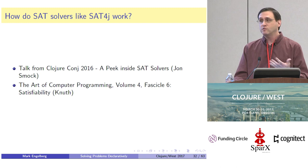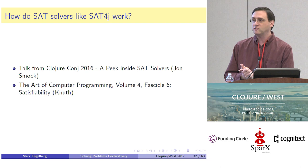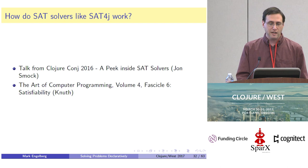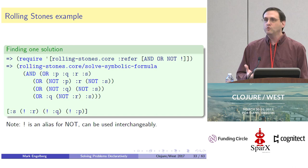How do SAT solvers like Sat4j work? I'm not going to go into that in this talk because it was already discussed at the last Clojure Conj in the talk 'A Peek Inside SAT Solvers.' Check that out, and there are other resources as well if you want to learn more about the underlying mechanisms. For now, I'd like to focus on how you actually use Rolling Stones to solve problems effectively.